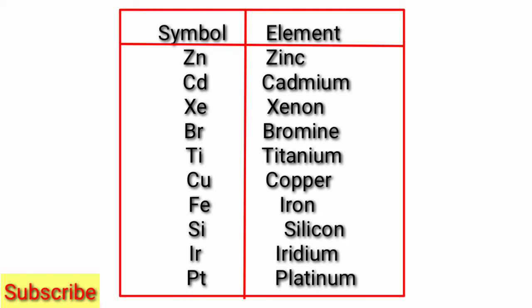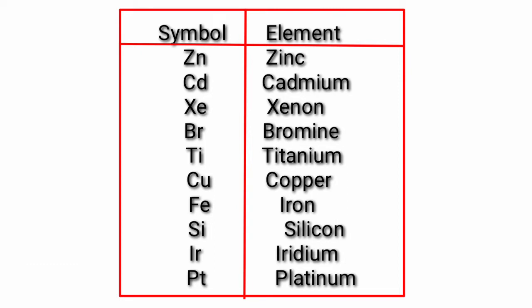Symbol Zn - element Zinc. Cd - Cadmium. Xe - Xenon. Br - Bromine. Ti - Titanium. Cu - Copper. Fe - Iron. Si - Silicon. Ir - Iridium. Pt - Platinum.